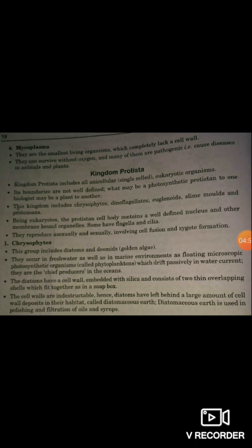Diatoms are cheap producers in the ocean. They have cell walls embedded with silica and consist of two thin overlapping cells which fit together like a soap box. Diatoms have left behind large deposits of cells in their habitat called diatomaceous earth, which is used in polishing and filtration of oil and syrup.